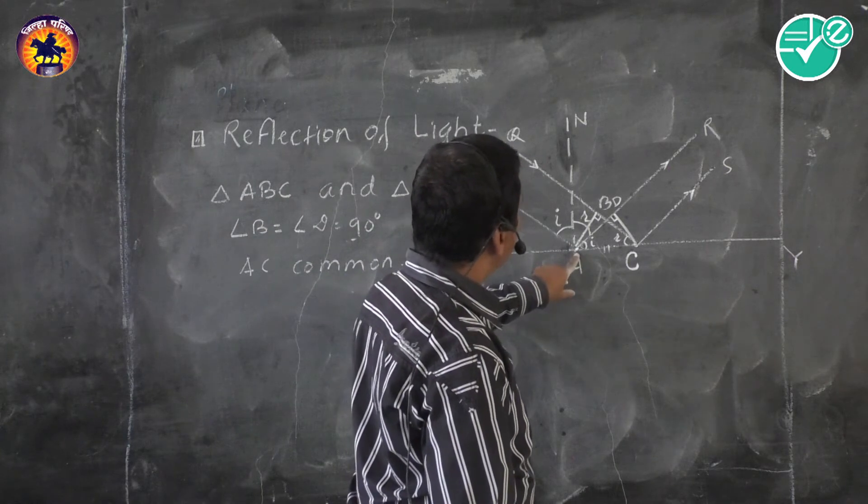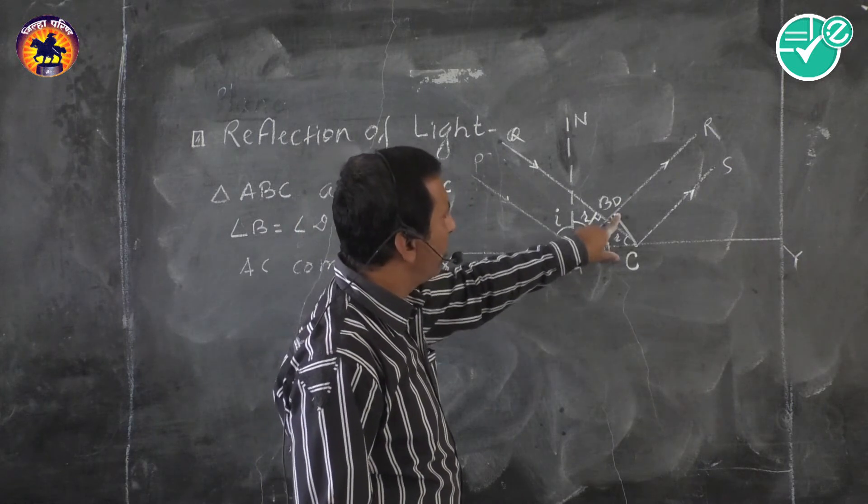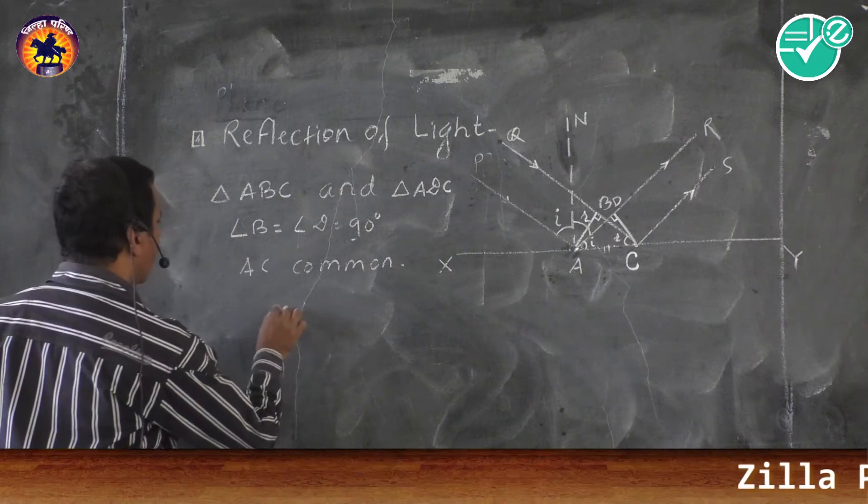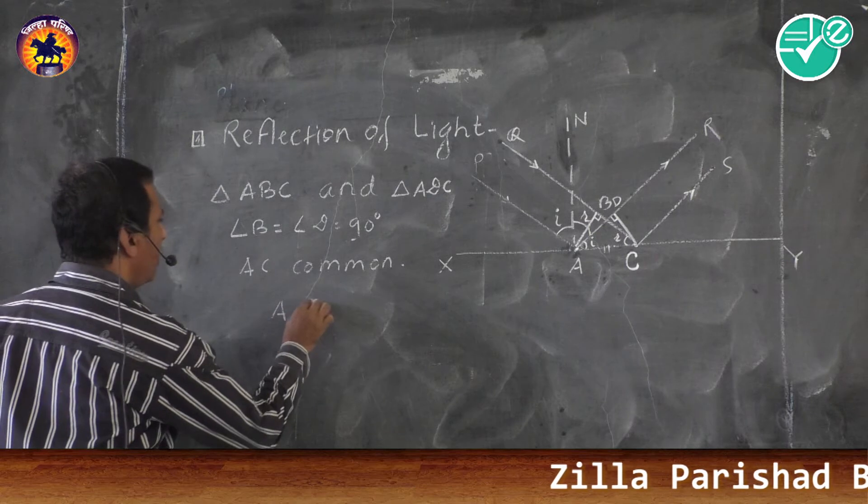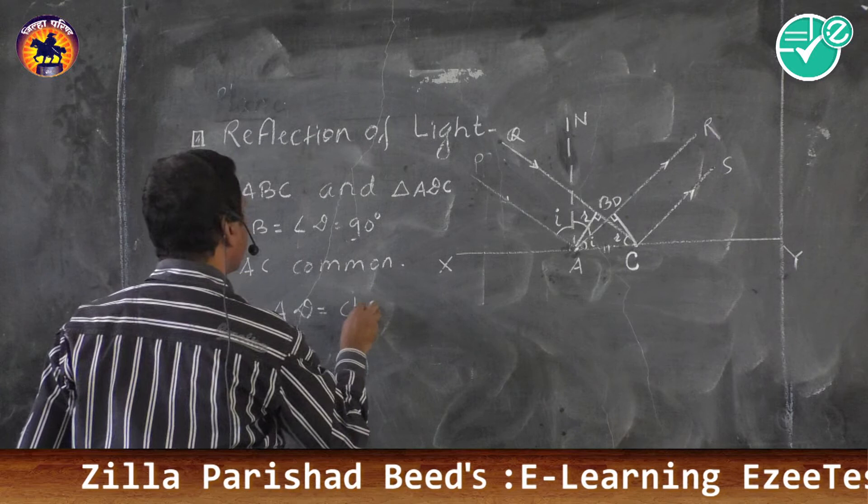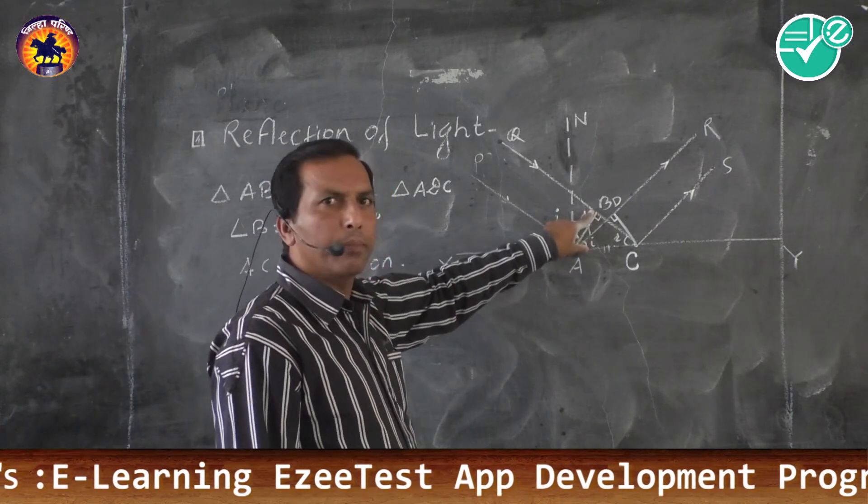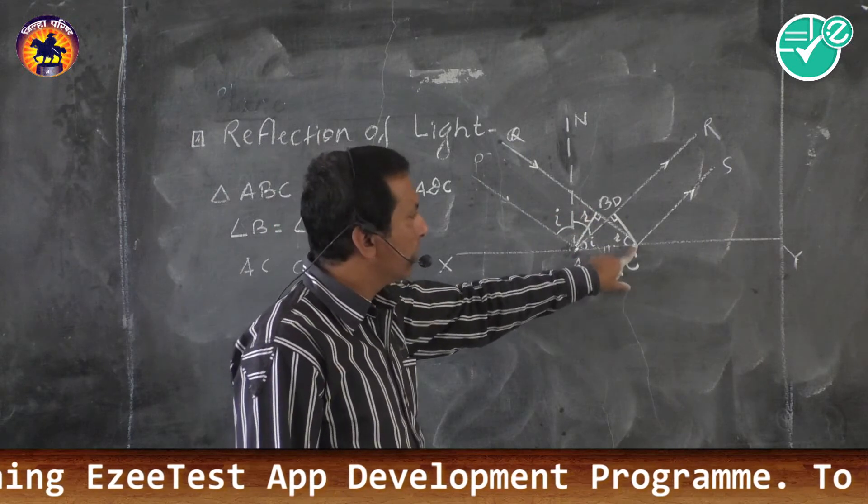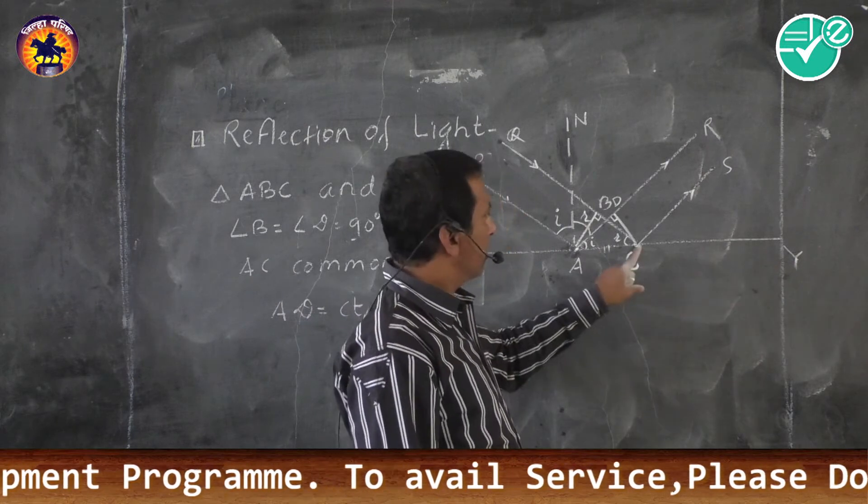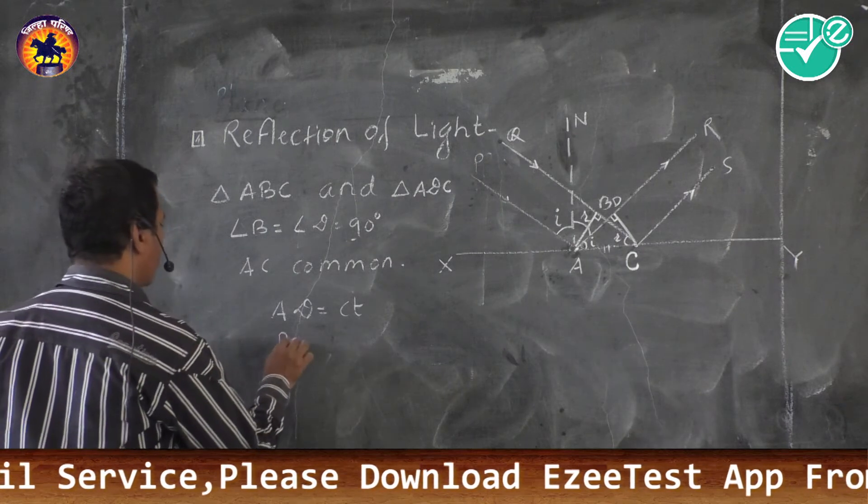And if light wave reflects from point A to D in time T with velocity C, then AD must be equal to CT. At the same time, the point B travels towards the plane reflecting surface XY. Then this distance must be equal to CT.